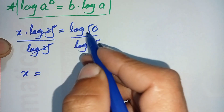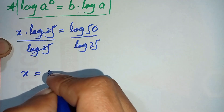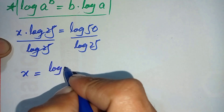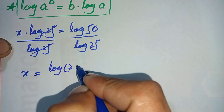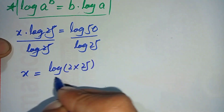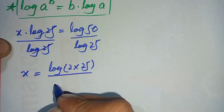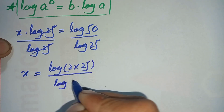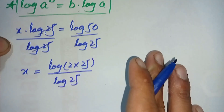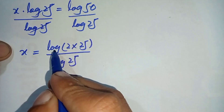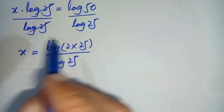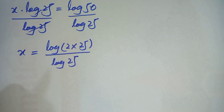On the right-hand side we can write log(50) by factorizing 50 as 2 times 25, so we have log(2 × 25) divided by log of 25.